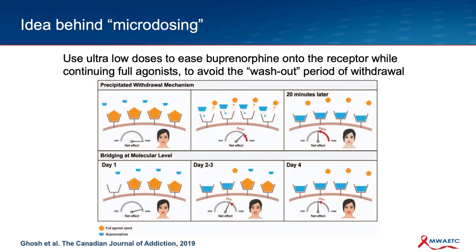The idea behind microdosing is basically that if you can gradually introduce low doses of buprenorphine into the system, you can gradually displace the full opioid and get people on buprenorphine without the withdrawal washout period. This is demonstrated graphically: you've got your full opioid occupying the receptor. If you take a big dose of buprenorphine all at once, you displace that full opioid, your mu activation goes down, and you get sick. But if over several days you gradually introduce higher and higher doses of buprenorphine, you can fully occupy those receptors while avoiding precipitated withdrawal.